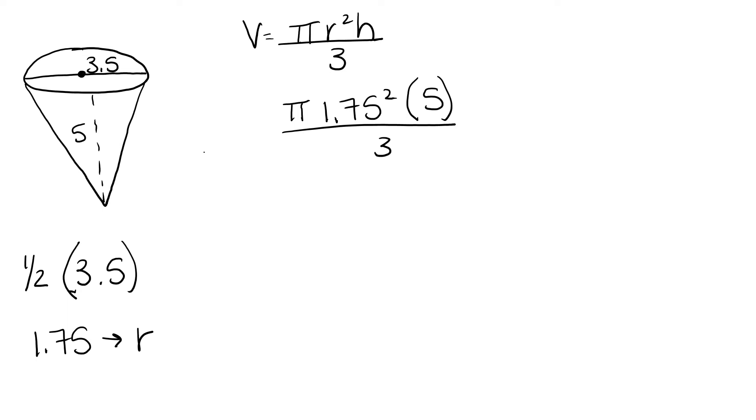Solving the exponents first, 1.75 squared is going to give us 3.0625. We multiply that number times the height, 5, to get 15.3125.